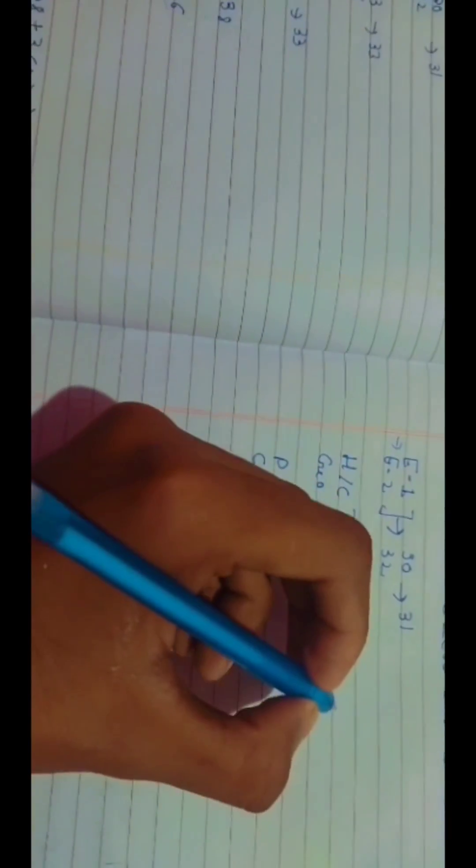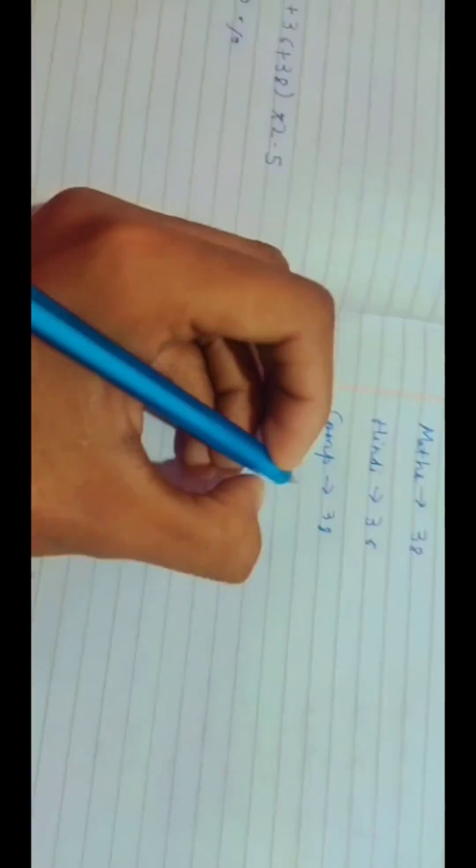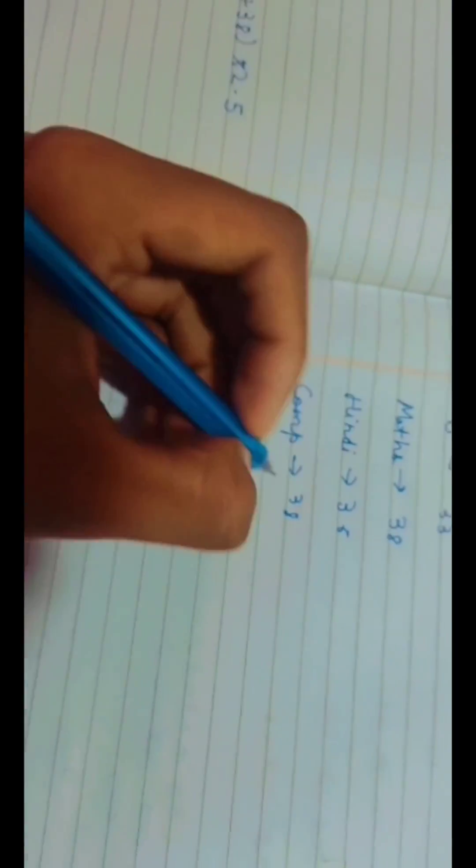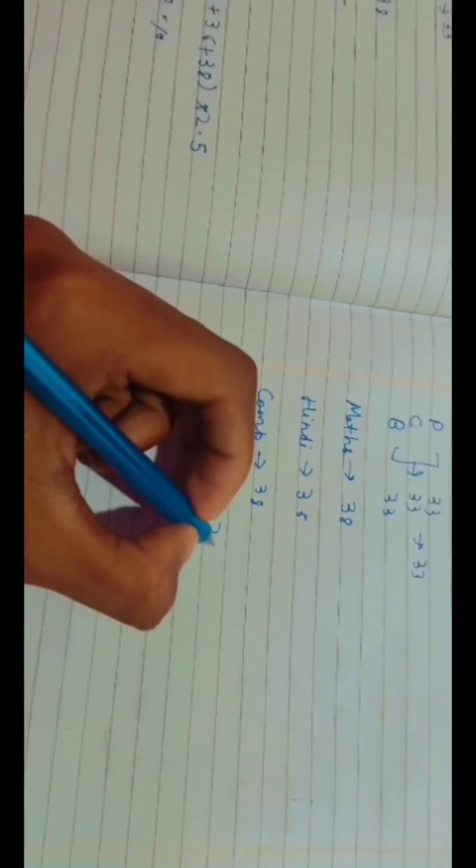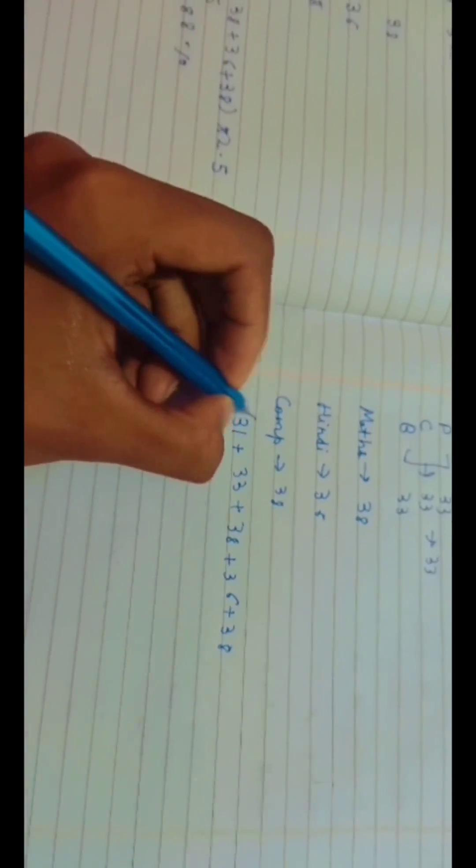And now what are top five? English language 31, plus history bio that's 33, that's maths 38, then 36, computer 38. What we're going to do is multiply by 2.5 since 100 upon 40 is 2.5 and we had 40 marks paper.